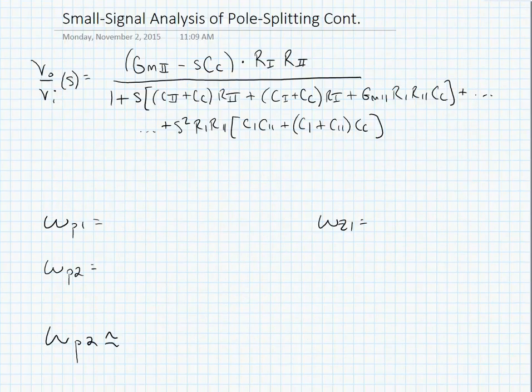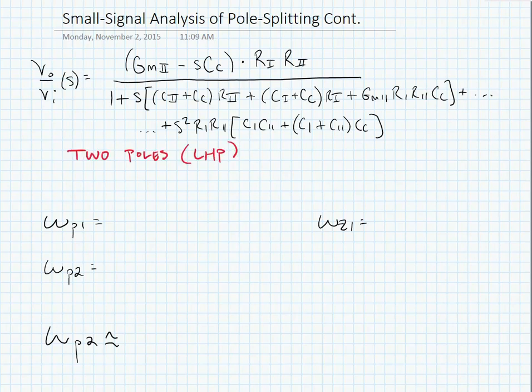Here I've just rewritten that expression. We can see it all a bit more clearly now. We can again see that there are two poles. Both of these poles are in the left half plane. We can see that there is one zero, and that one zero is in the right half plane.